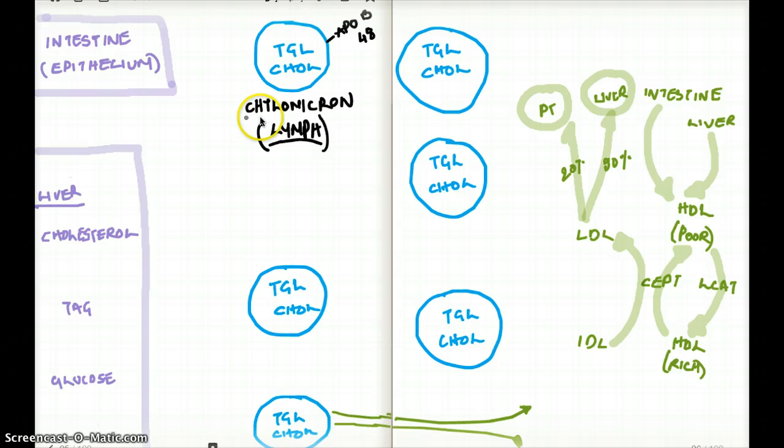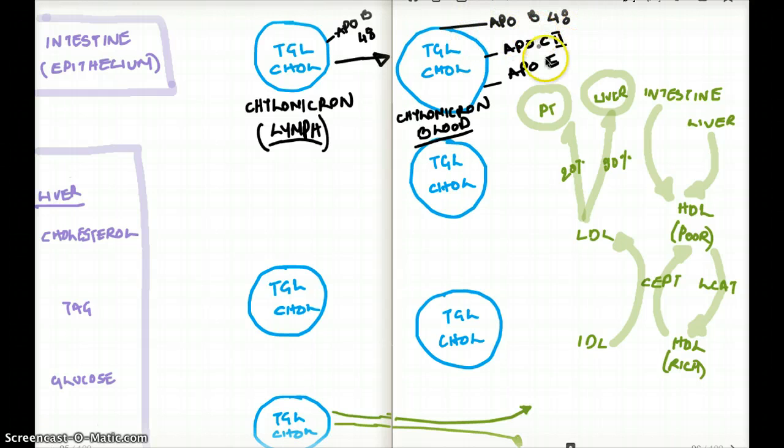As soon as this chylomicron reaches the blood, there's going to be two additional tags, and those are ApoC2 and ApoE. So from our chylomicron in the lymph, our chylomicron is going to the blood, and as soon as the chylomicron is in the blood, along with ApoB48, now we have ApoC2 and ApoE.